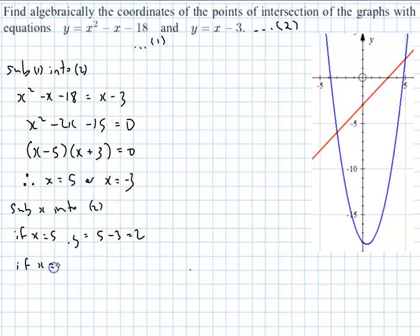And if x is equal to negative 3, y is going to equal negative 3 minus 3, which is negative 6. So our point down here is negative 3, negative 6. That point up here is the point 5, 2.